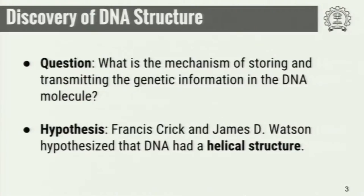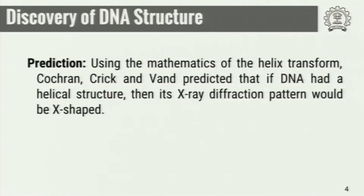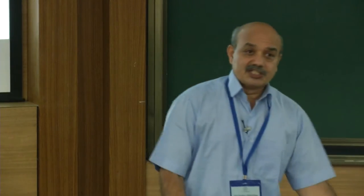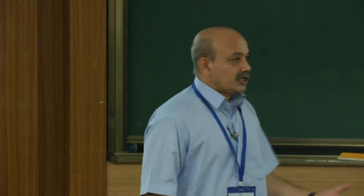The hypothesis made by Francis Crick and James Watson was that DNA has a helical structure. Using helical transforms, three scientists — Cochran, Crick and Vand — had predicted that if DNA had a helical structure, then its X-ray diffraction pattern should be X-shaped. First there was a hypothesis or conjecture that the arrangement of nucleotides is in a helical form, and using mathematics — purely devoid of any biological considerations — they predicted that if the arrangement is helical, the X-ray diffraction pattern should show a certain structure. This was purely a mathematical construct.